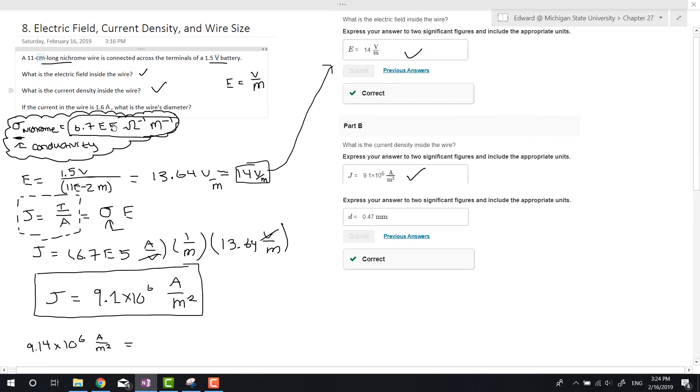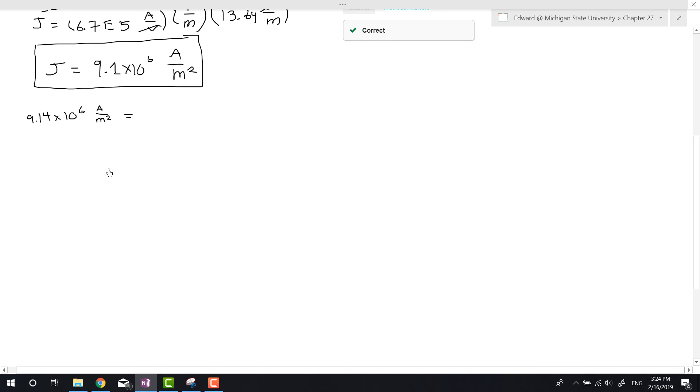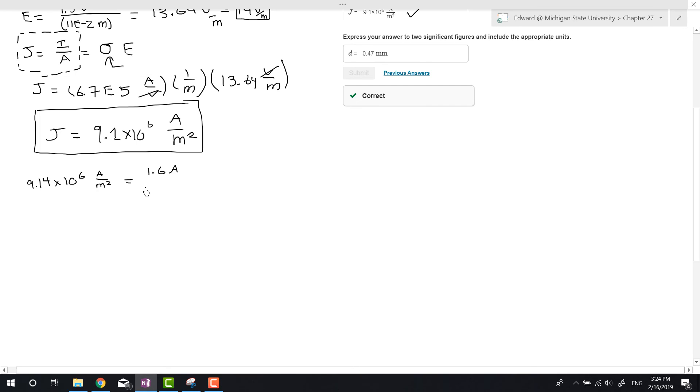So A = πr². We'll get diameter from the radius. Multiplying both sides, πr² equals 1.6 amps divided by 9.14×10^6 amps per meter squared. The amps cancel, leaving us with meters squared.